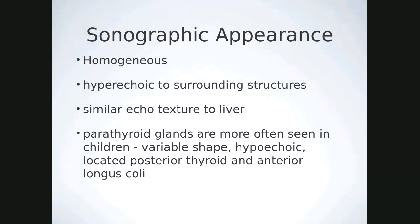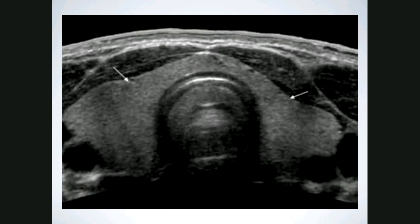Sonographically the thyroid should be homogeneous and hyperechoic to the surrounding muscles, with a similar echo texture to that of the liver. The parathyroid glands, if seen, are going to be slightly hypoechoic, very small, variable in shape, and typically found posterior to the thyroid lobes and anterior to the longus colli muscles. In this picture you would need to increase your depth slightly to see the longus colli muscles, which are blacked out here.